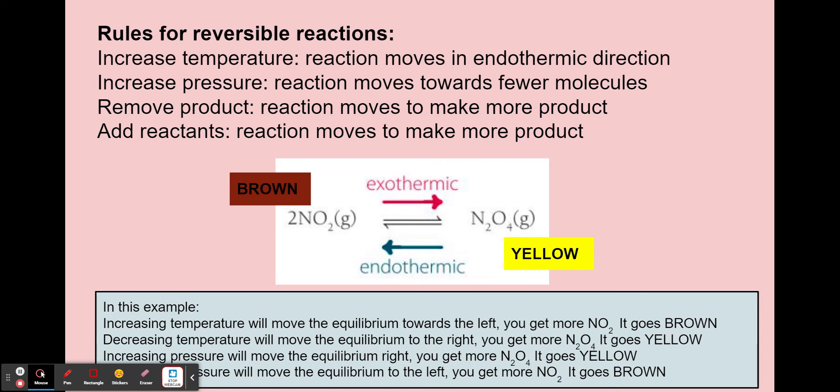So in this example, if you increase the temperature, it will move the equilibrium to the left, the reverse reaction, because that's endothermic. You'd get more NO2 and you'd get more brown coloration. Decreasing temperature would do the opposite and the equilibrium position would move towards N2O4 and it would be yellow.